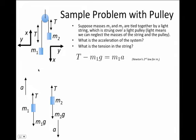For m1, in the positive x direction, I have T, and in the negative x direction, I have m1g. Notice that m1g points down, and for the left-hand object, that's in the negative x direction. So that's Newton's second law for m1.